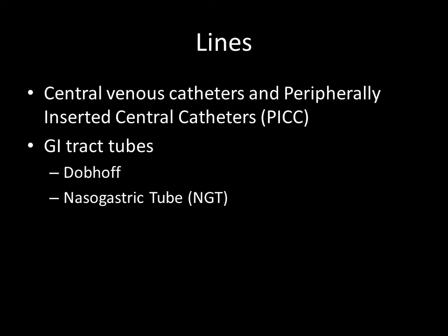We'll be looking at four main types of lines: central venous catheters, peripherally inserted central catheters, or PICs as they're commonly known, and the GI tubes, which are the Dobhoffs and the nasogastric tubes.